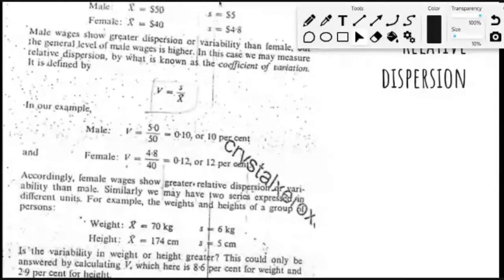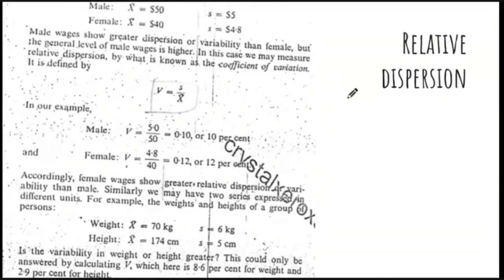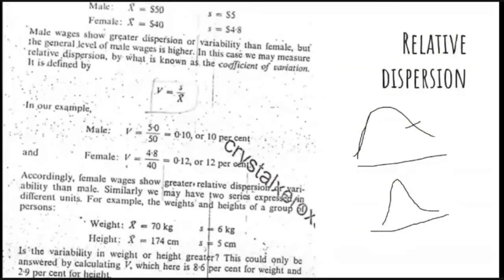So, relative dispersion — what happens? Relative dispersion is basically used when you compare two distributions. Suppose you have one distribution and another distribution, and now instead of calculating the dispersion of one distribution, you want to know the relative dispersion between this distribution and this distribution.